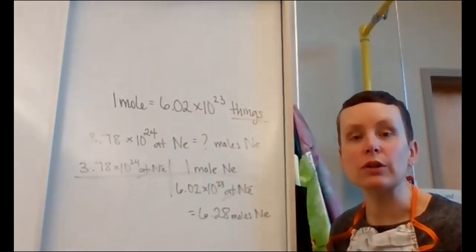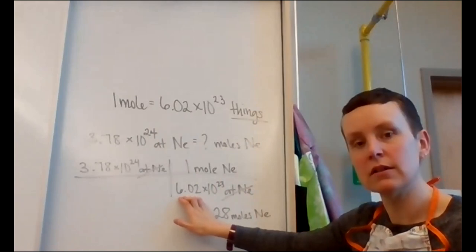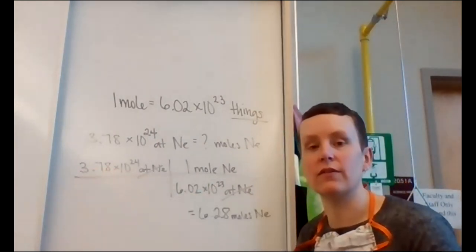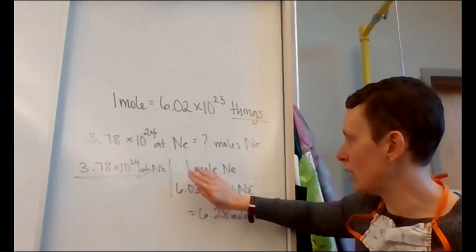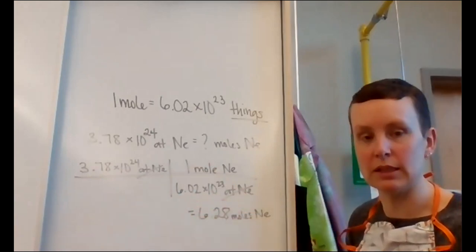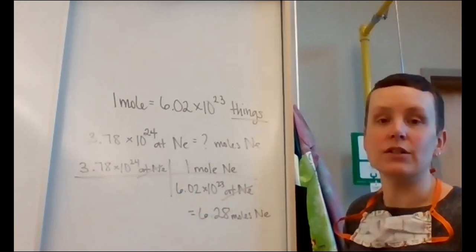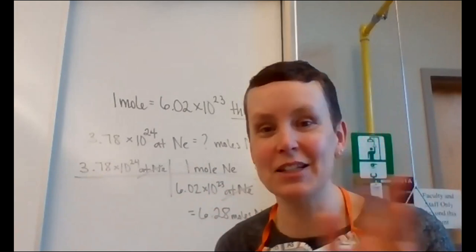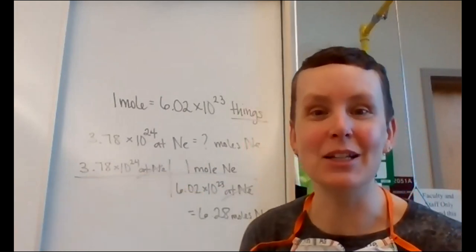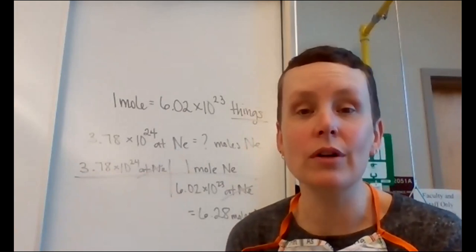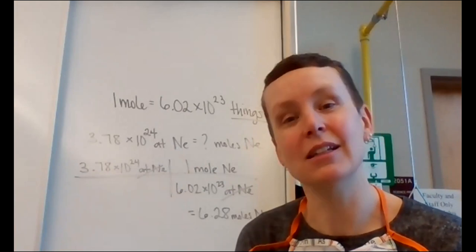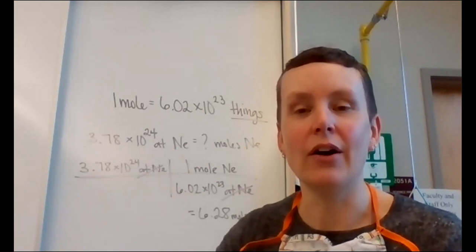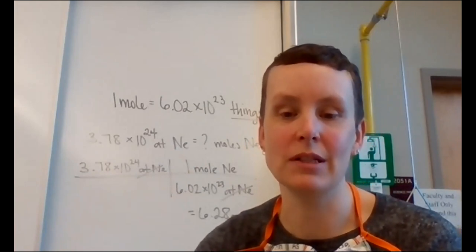Regarding sig figs: Avogadro's number as we use it has three significant figures, and 3.78 times 10 to the 24th also has three sig figs — when using scientific notation, the 'times 10' part doesn't count. So the answer has three sig figs. Remember: a mole is like a dozen — a dozen is 12 things, a mole is 6.02 times 10 to the 23rd things. Don't make the concept more complicated than the number itself.